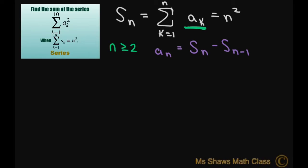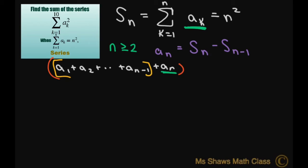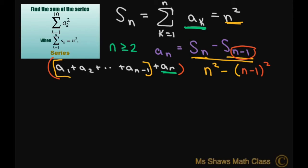Basically, if you had a sub 1 plus a sub 2 plus dot dot dot plus a sub n minus 1 plus a sub n, then to get a sub n, you would take the sum of all of this minus the sum without the last term. We know S of n is n squared, so we do n squared minus S of n minus 1, which is n minus 1 squared. That all equals 2n minus 1.